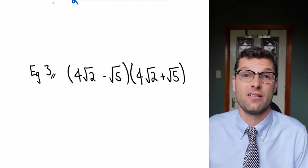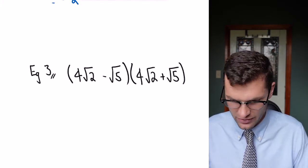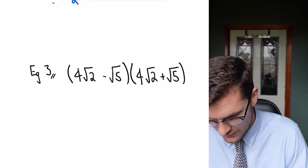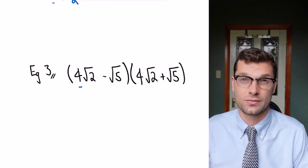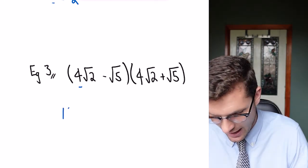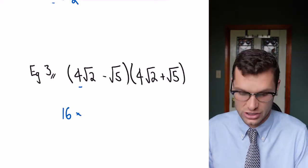Finally, we can even have terms where we've got a number or an integer out the front of the surd, and it doesn't change a thing. We just have to remember to square the whole thing. For this one I've got 4√2 and that's all going to be squared. So 4² is 16, and that is multiplied by √2² which is just 2.